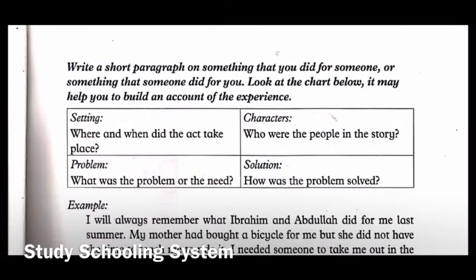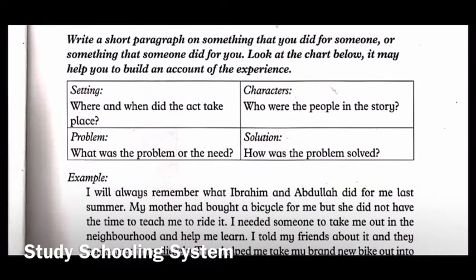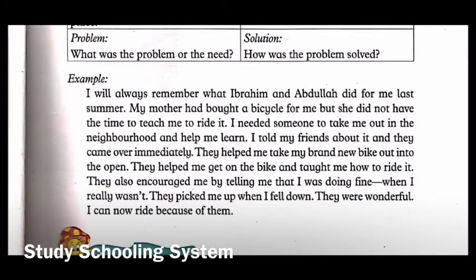They've given us a table with four things to talk about. Setting — where and when did the act take place? Characters — who were the people in the story? Problem — what was the problem or the need? Solution — how was the problem solved? We have to write about something you did for someone or something someone did for you — any random act of kindness. You will talk about the people, the action, why they did it, the problem, how it was solved, and the place and time.